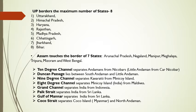Ten degree channel, Andaman aur Nicobar dweep samuho ko alag-alag karta hai. Duncan Passage, South Andaman aur Little Andaman ko separate karta hai. Nine degree channel, Kavrati aur Minicoy island ke madhya payi jaati hai. Eight degree channel, Minicoy island aur Maldives ko alag karta hai. Great channel, India aur Indonesia ko baanta hai. Palk Strait separates India from Sri Lanka.